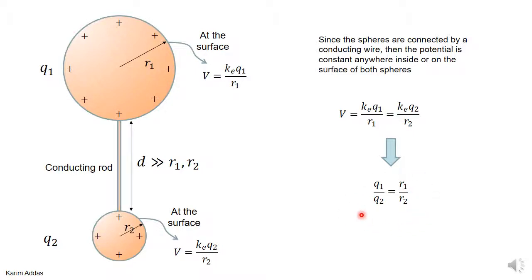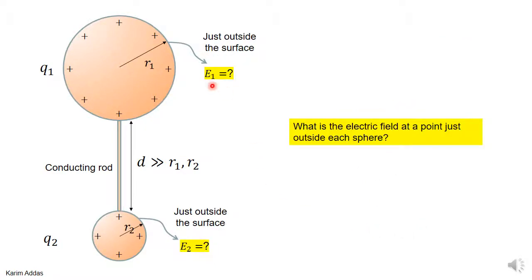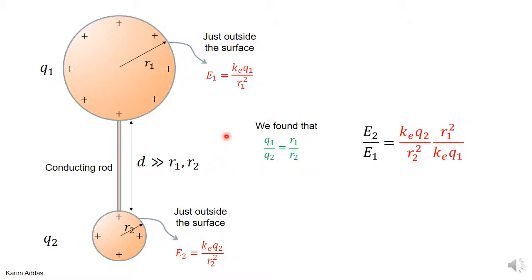This intermediate result — that the ratio of charges equals the ratio of radii — will help us find the ratio of electric fields. If each conductor is treated as independent, the electric field just outside each sphere is kq/r². So E2 equals kQ2/R2² and E1 equals kQ1/R1². We know from the potential argument that Q2/Q1 equals R2/R1.